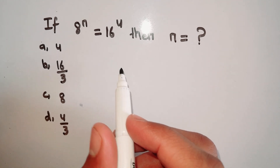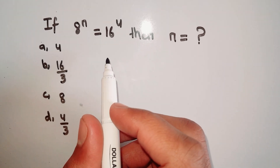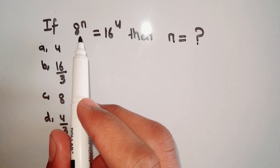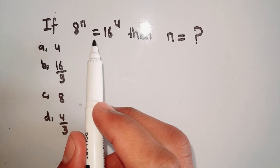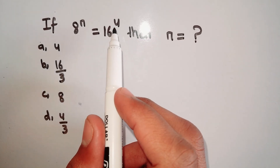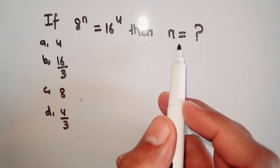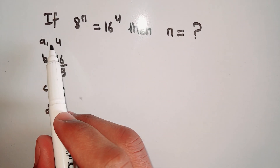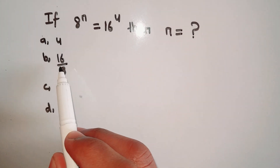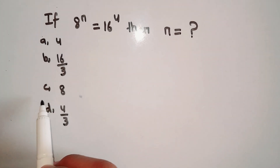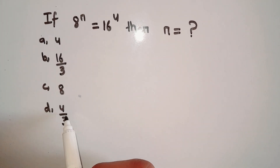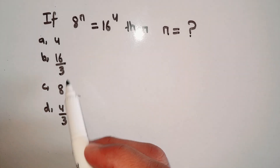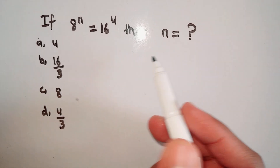Welcome back to another video. In this video we are going to solve this problem: if 8 power n is equals to 16 power 4, then n is equals to what? Option A: 4, Option B: 16 upon 3, Option C: 8, Option D: 4 upon 3. So which one is correct? We are going to find this.